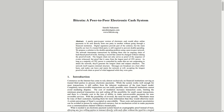It reads as follows — 'Bitcoin: A Peer-to-Peer Electronic Cash System.' We will only read the abstract: 'A purely peer-to-peer version of electronic cash would allow online payments to be sent directly from one party to another without going through a financial institution. Digital signatures provide part of the solution, but the main benefits are lost if a trusted third party is still required to prevent double spending.'